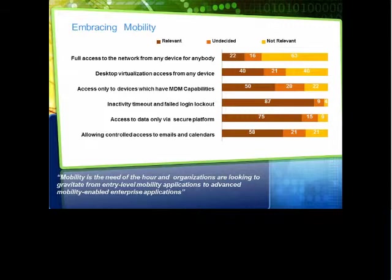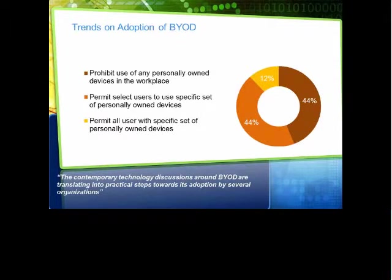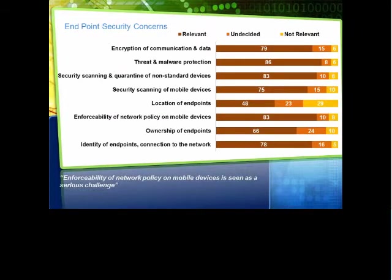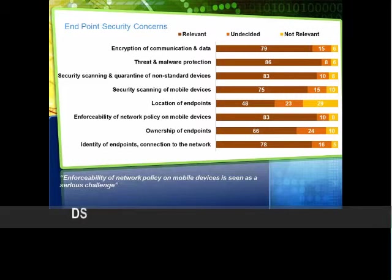Our survey shows interesting BYOD adoption trends. A significant number of IT leaders still prohibit the use of any personally-owned device, while several others are taking cautious steps, allowing only select users to use personally-owned devices. With respect to endpoint security concerns, security scanning of mobile devices, quarantine of non-standard devices, encryption of communication and data, and threat and malware protection have emerged as key concerns. Respondents also expressed concerns around identification of endpoints requesting network access, ownership of devices, and enforceability of network policies on mobile devices.